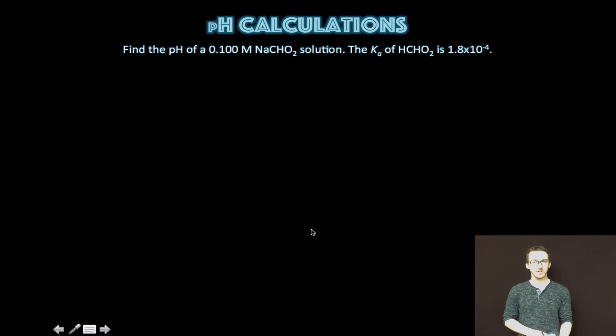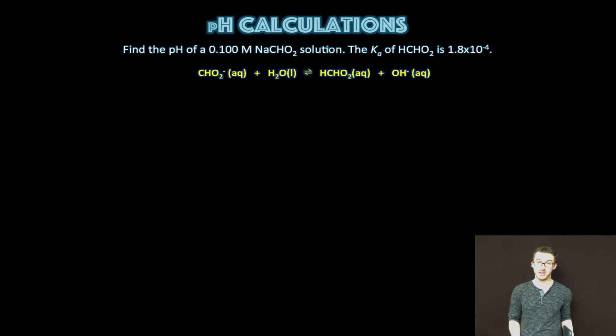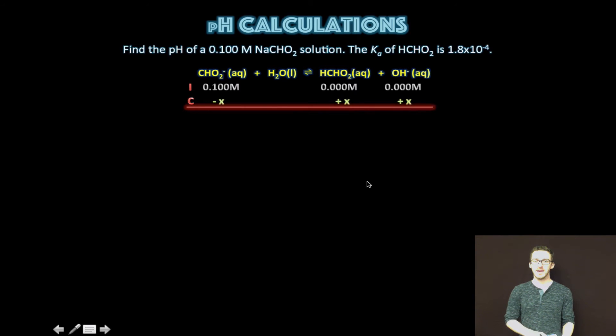All right, so let's work it through. First thing we want to do after we've decided which ion is going to act as a weak acid or weak base is write the reaction for that ion with water. The formate ion is going to split water to form formic acid and additional hydroxide ion. We're told the initial concentration of the formate ion is 0.100 molar. And initially, we have no formic acid or hydroxide ion. The change in concentration, we're going to determine stoichiometrically all one to one. And then at equilibrium, we're going to combine our initial and changes to come up with the concentrations at equilibrium.